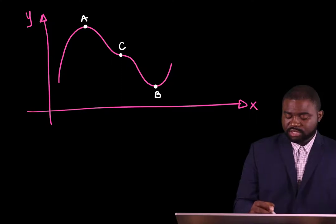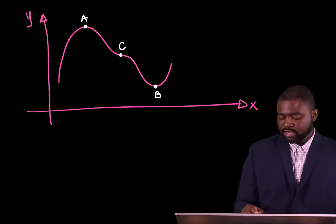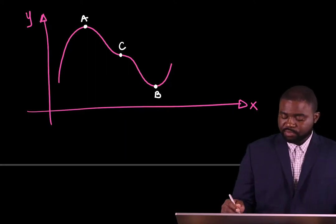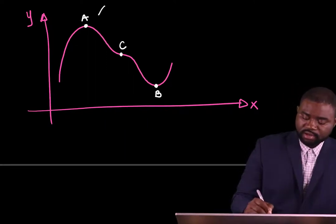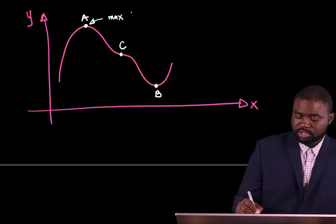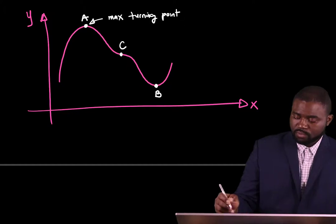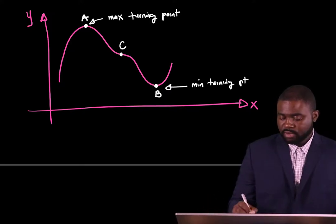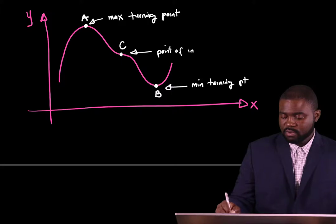Now what do you notice? You will notice that the slope changes at A, B, and C. At A, the slope is initially positive and changes to become negative. At C, it changes from negative to negative. And at B, it is initially negative and then changes to positive. So A is a maximum turning point, B is a minimum turning point, and C is what we call a point of inflection.